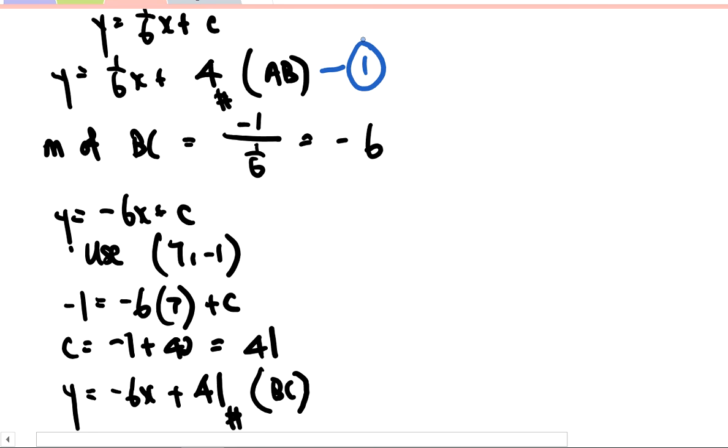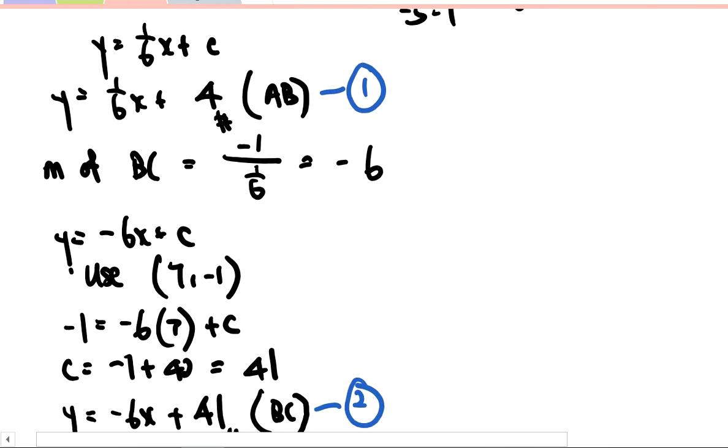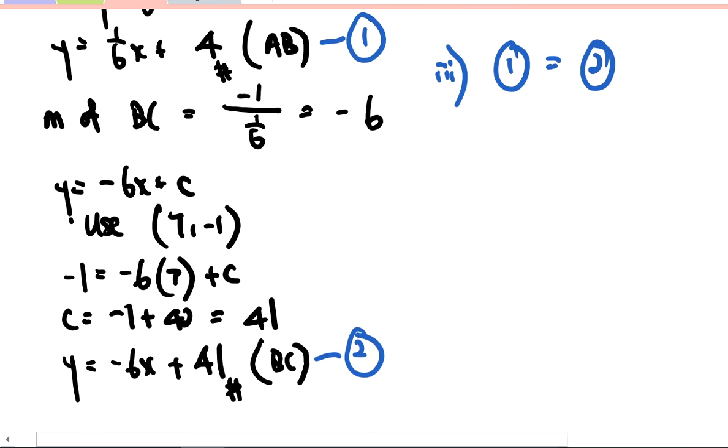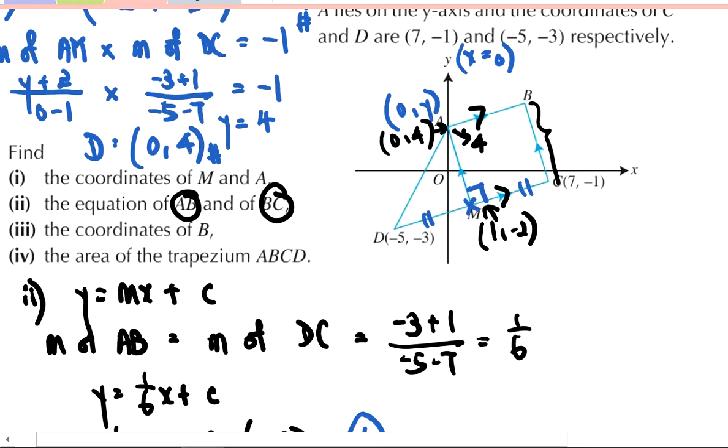I'm labeling my AB, I'm labeling my BC. So now, very simple: In order to find the coordinates of B, I just have to solve for simultaneous equation. Equation 1 equal to equation 2. That's the good thing—y is the subject, just equate them together. So by solving simultaneous equation, my x is equal to 6.